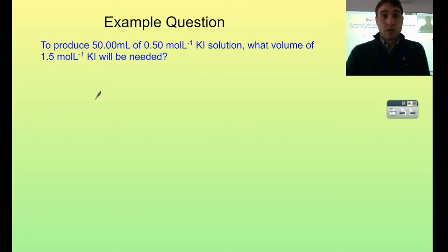Let's do an example question. To produce 50 mL of 0.5 molar potassium iodide solution, what volume of 1.5 molar potassium iodide will be needed? This is our starting concentrated solution. We're diluting it down here. I'm going to start by writing the equation.